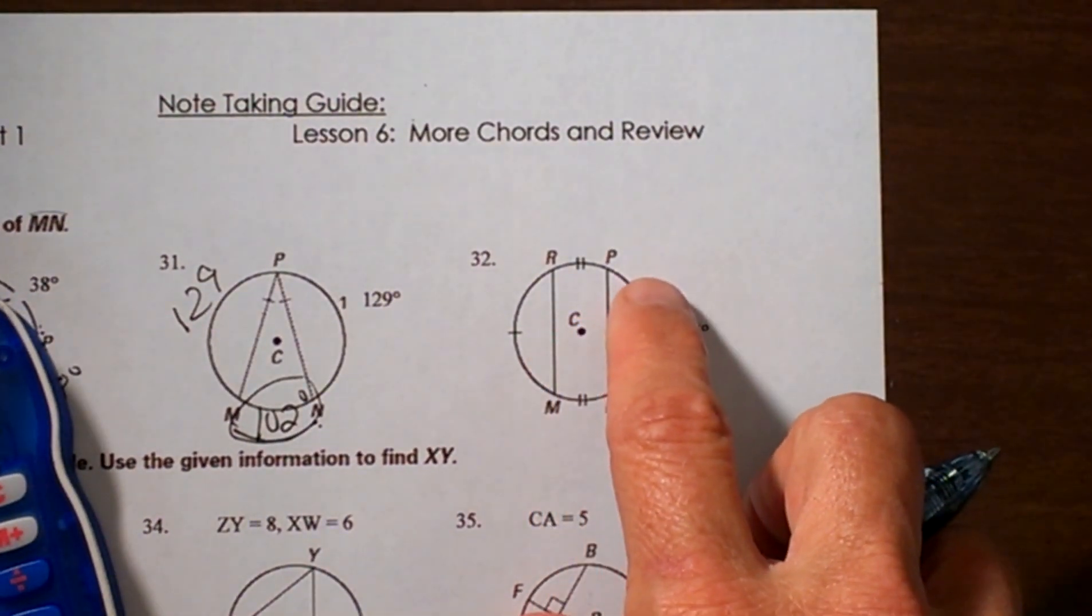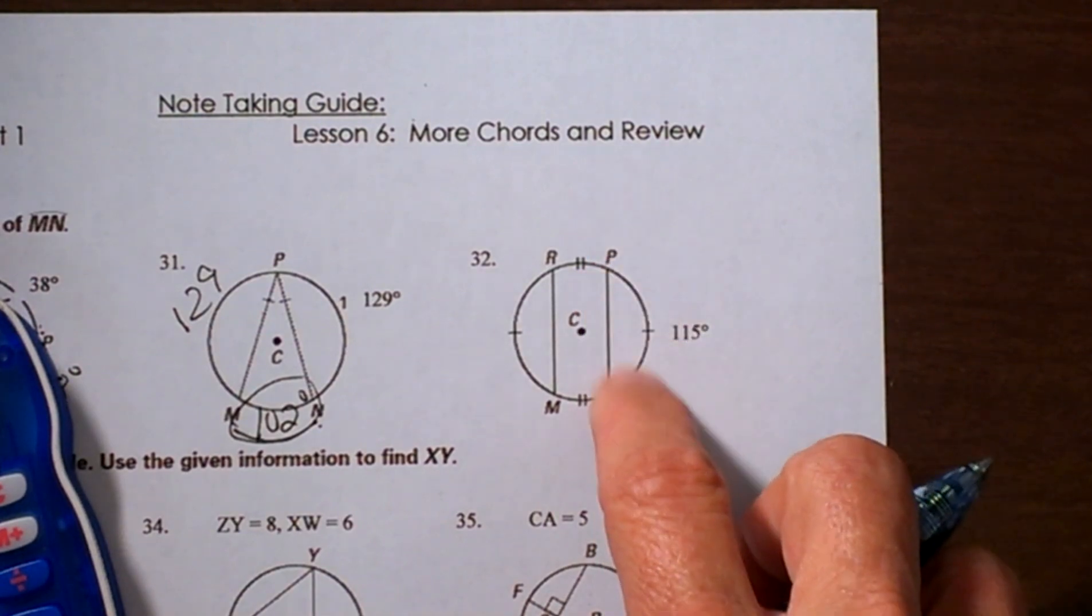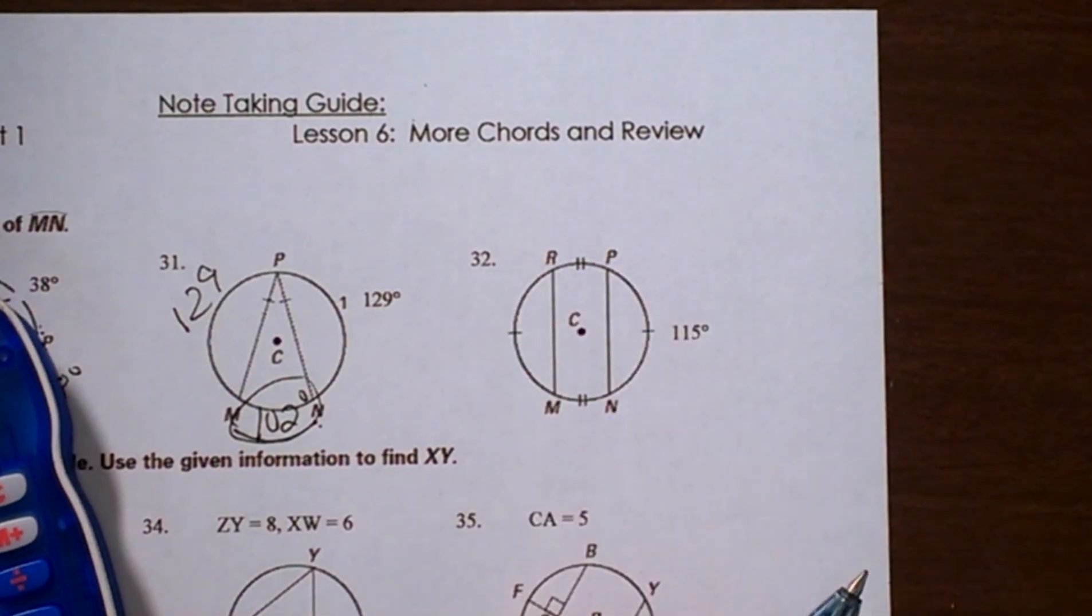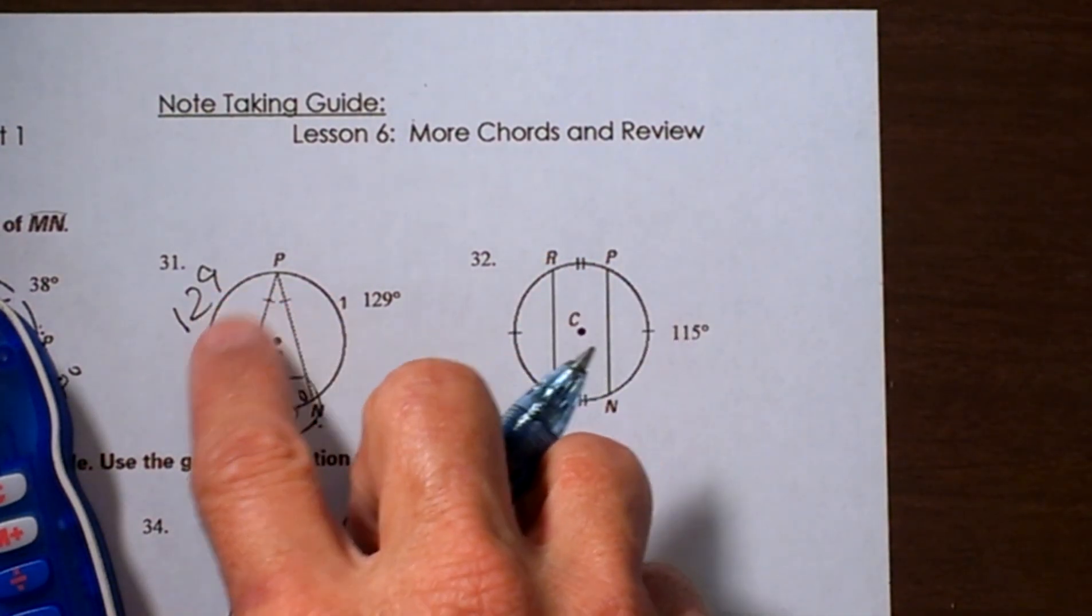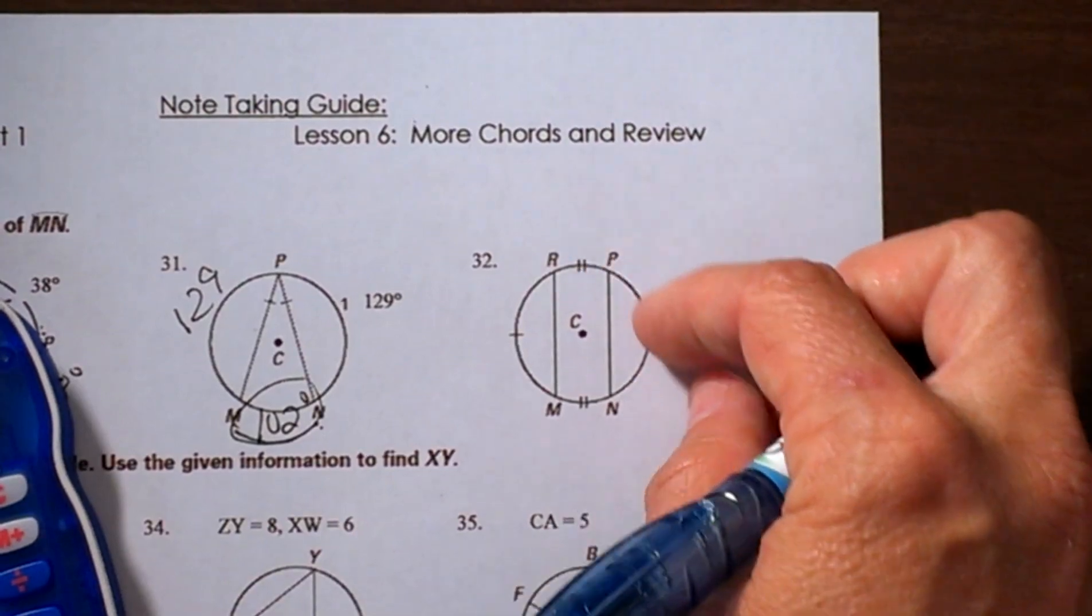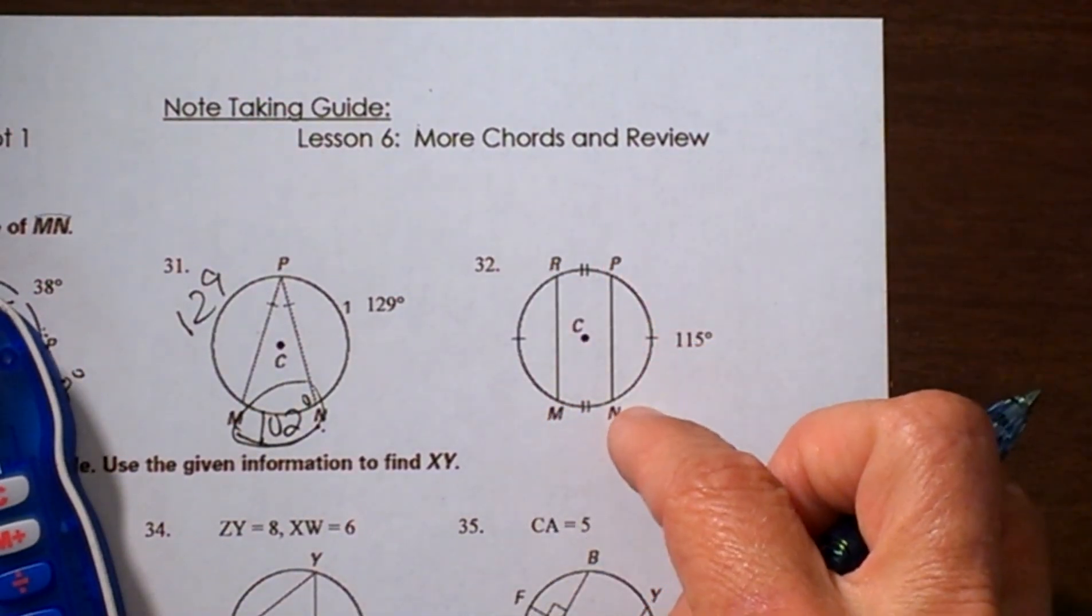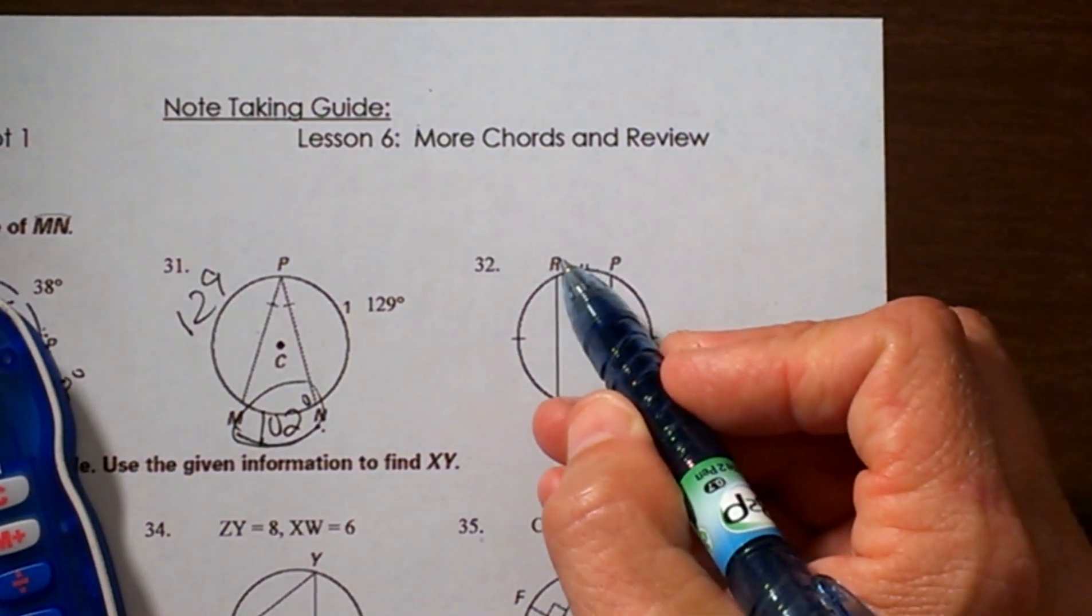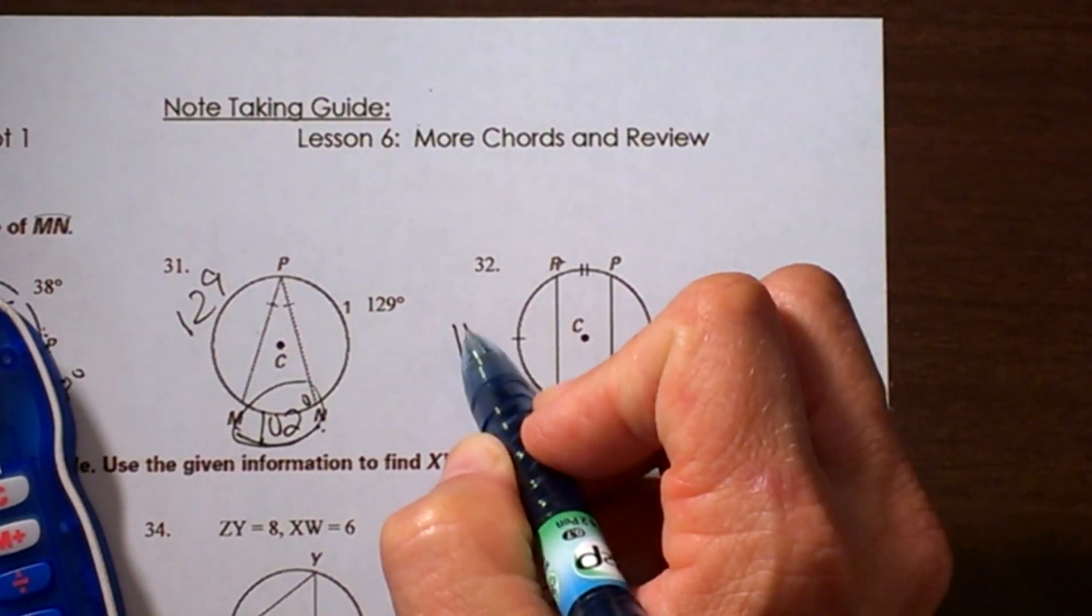Now this is kind of the same concept, but this time we have arcs marked congruent instead of the segments marked congruent. So let's look: this arc is the same as this arc. So PN has a measure 115, so RM has a measure of 115.